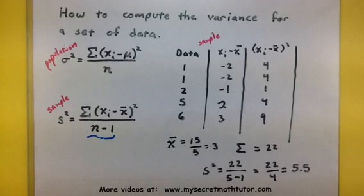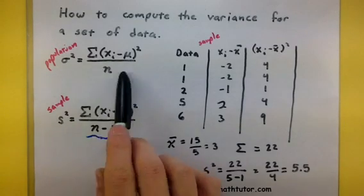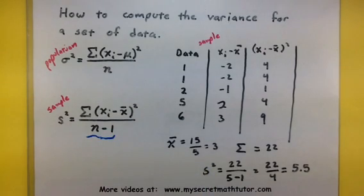And there you have it. Now if this was a population, the process would work out almost identically. The only difference is we would actually divide by 5, since in the formula it just has n, rather than by 4.